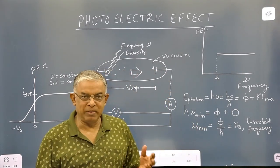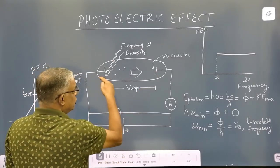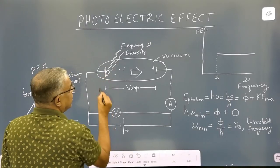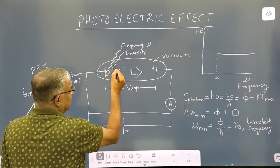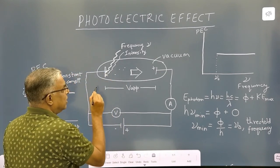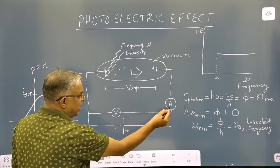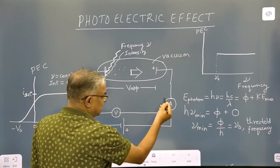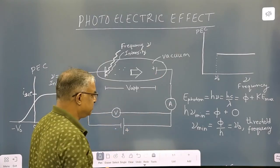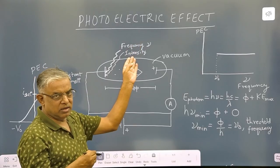How could Einstein explain the photoelectric effect? First of all, look at the setup — a vacuum tube which contains two electrodes. One of the electrodes is coated with cesium. When light of certain frequency larger than a certain minimum frequency, called threshold frequency, is incident on it, electrons are emitted. In this setup, we can change the frequency and the intensity of the incident light.